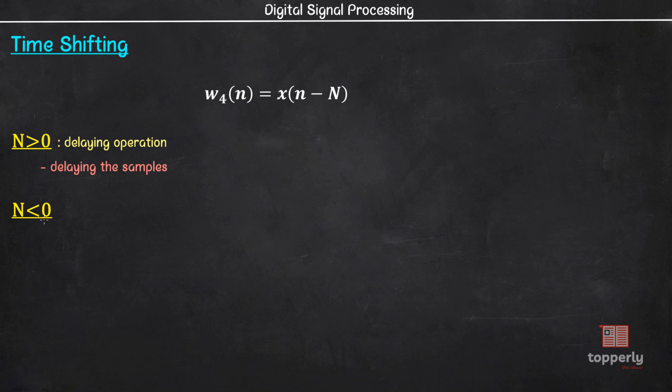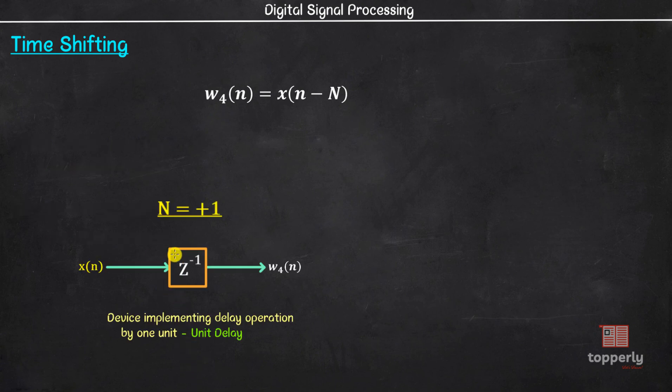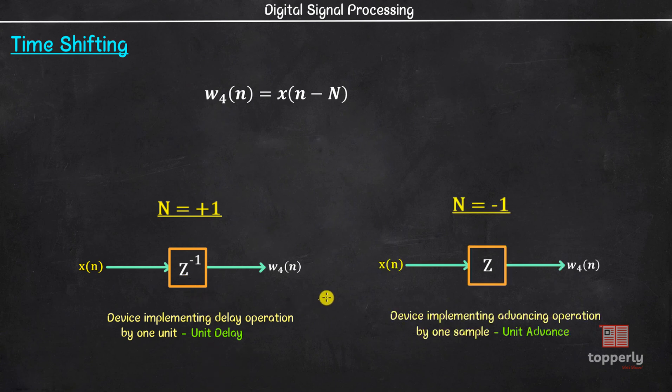On the other hand, if capital N is less than 0 then we are advancing the sample and the operation is called advancing operation. You can try this yourself by setting a negative integer value for capital N. You can try it on the same sequence z of n and see how the discrete signal will look like after performing the advancing operation. Now, the device implementing delay operation by one sample is called a unit delay and its schematic representation looks like this. You will understand why we are using this z raised to minus 1 symbol when we study about z transform of sequences. The device implementing advancing operation by one sample is called a unit advance and its schematic representation looks like this.